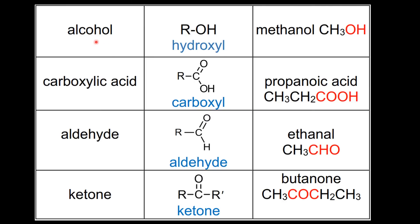Next we have the alcohols. The functional group is called the hydroxyl group — an example is methanol. The carboxylic acids have a carboxyl group — an example is propanoic acid. The aldehydes and the ketones both have a carbon double bonded to an oxygen, which is a carbonyl group.